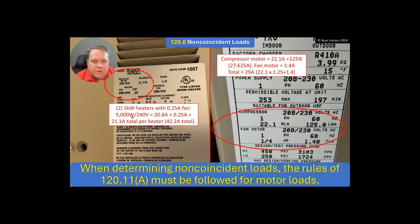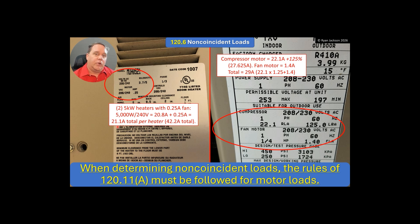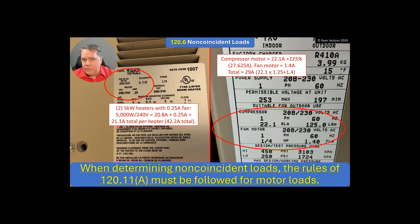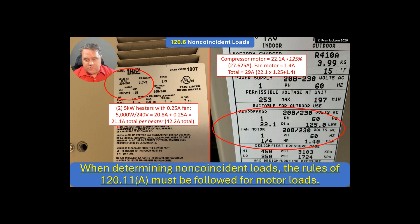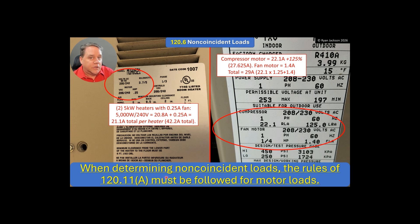So we've got 5,000 divided by 240, which is 20.8 amps. We're going to add the motor, which is a quarter of one ampere, so I've got 21.1 amps per heater. But there's two of them on the feeder, so on this feeder circuit I've got 42 amps of heat and 29 amps of cooling. If those are not going to be on at the same time, then I get to remove the cooling load. There could be instances where both are on at the same time — it's not just a hard and fast rule that you get to remove the smallest of the heating and air conditioning. Usually you can, but not always. So when determining non-coincident loads, you've got to follow the motor rules like we just talked about.